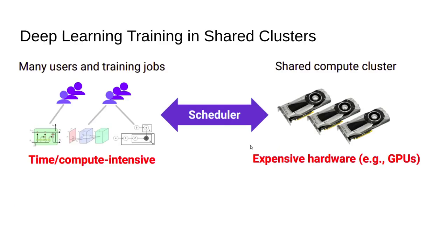This paper is about deep learning training in a shared cluster. We want to train models in a shared cluster which has multiple nodes, each having multiple GPUs, connected over a network. These clusters are shared between multiple users, each of whom can submit multiple training jobs. Each ML model training job is time- and compute-intensive.